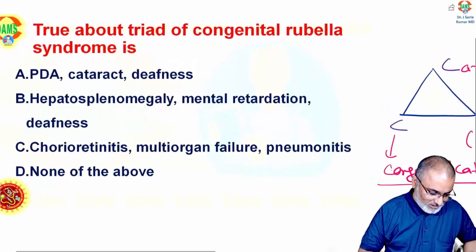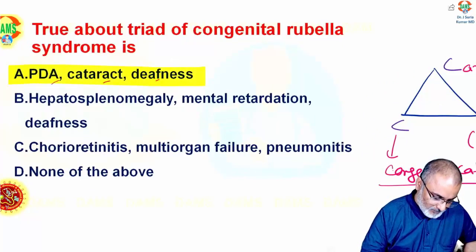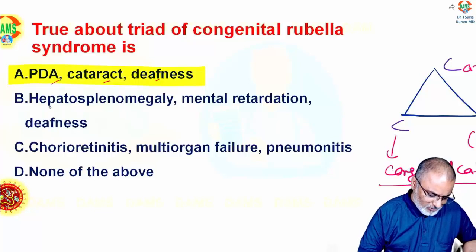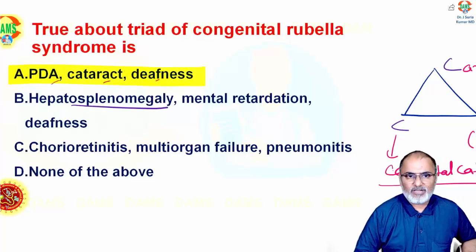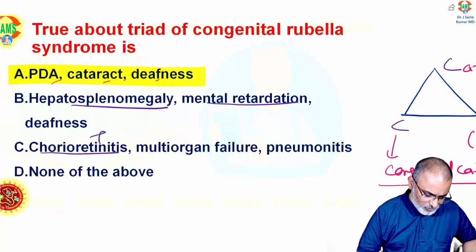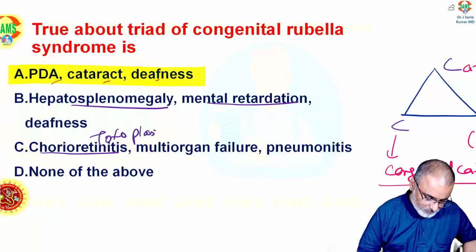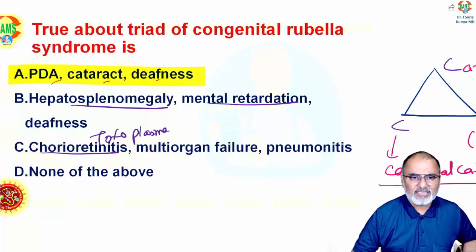Now going to the choices: PDA, cataract, and deafness — this is the correct answer. Hepatosplenomegaly can be seen in CMV (cytomegalovirus). Mental retardation can also be seen in CMV, and deafness is not a typical feature there. Chorioretinitis is mainly seen in CMV and Toxoplasma. Multi-organ failure and encephalitis can be seen in measles.